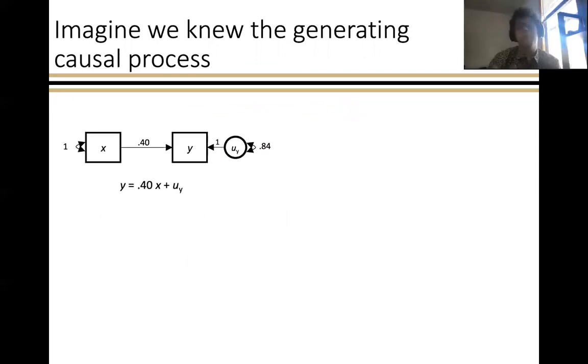To start, I want to begin in this hypothetical space where we're talking about a situation that we would not run into, in which we actually know what the relationships are between the variables. So here, let's say that we know that the regression relationship between x and y is 0.4, and that y has a residual variance of 0.84, which would imply this particular set of relationships where y equals 0.4 times x plus this residual u.